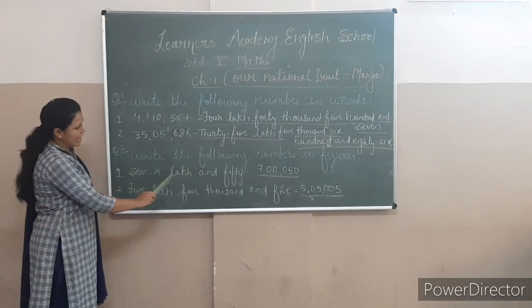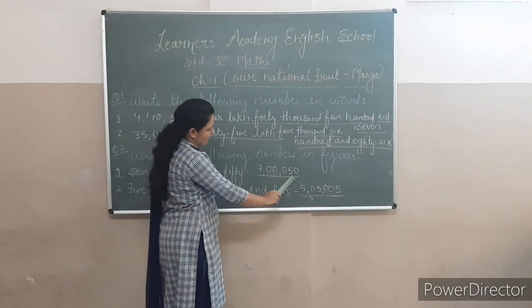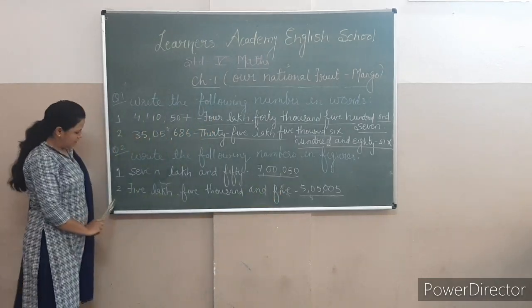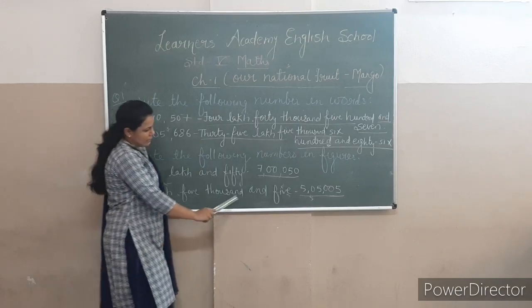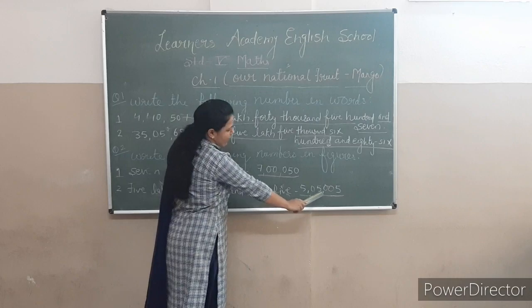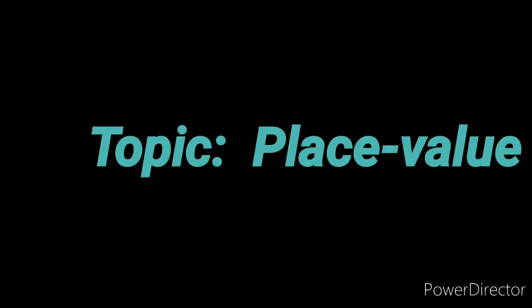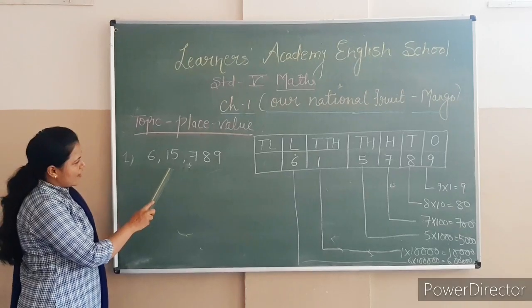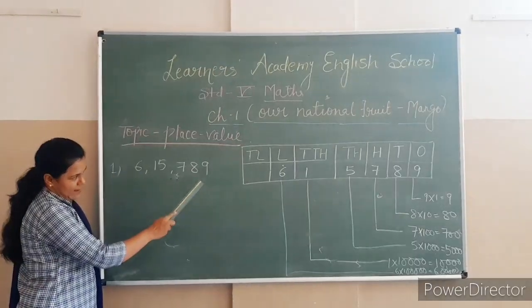First is 7,50 and the second one is 5,50,500. Then 15,789.